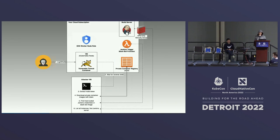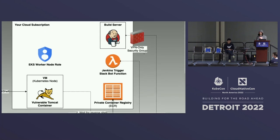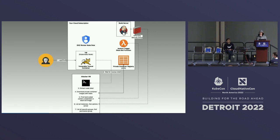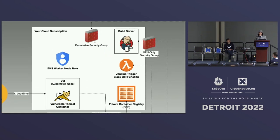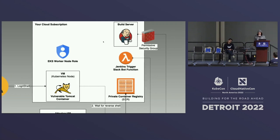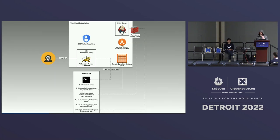Our attacker lists all instances in the account, finds the Jenkins build server, but sees it's behind a VPN-only security group. So they list all security groups in the account to find a more permissive one, then use their permissions to change the Jenkins build server's security group to the more permissive one — and can now access and compromise the Jenkins build server.